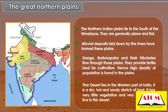The Thar Desert lies in the western part of India. It is a dry, hot and sandy stretch of land. It has very little vegetation and very few people live in this desert.